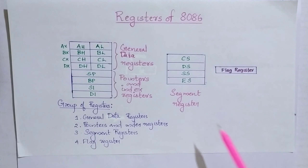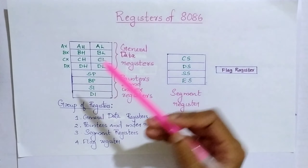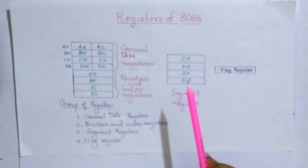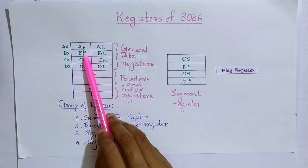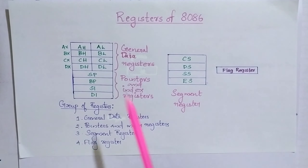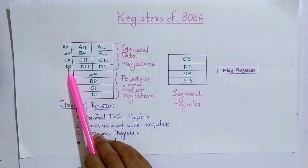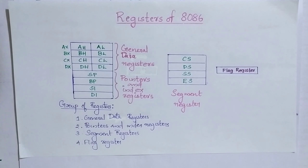The general data registers consist of AX, BX, CX, and DX. Each register has a higher byte (H) and a lower byte (L), each of which is 8 bits, while the full register AX is 16 bits. The same applies to BX, CX, and DX — they are all 16-bit registers where BH and BL are 8 bits, CH and CL are 8 bits, and DH and DL are 8 bits.